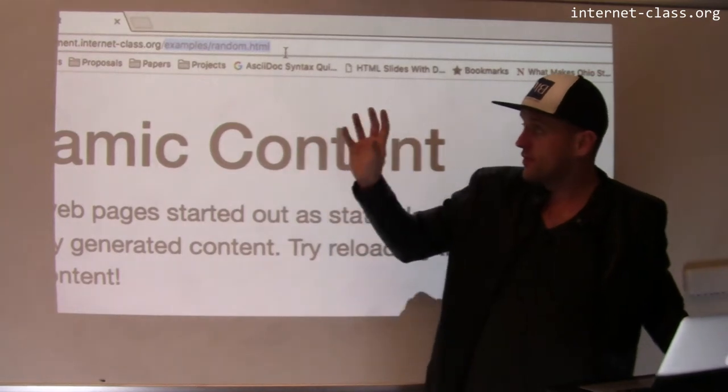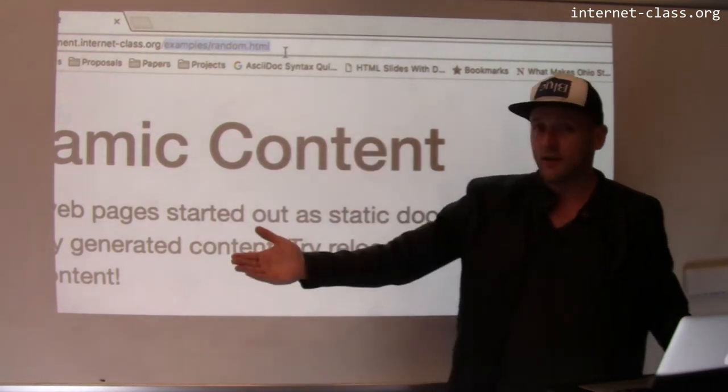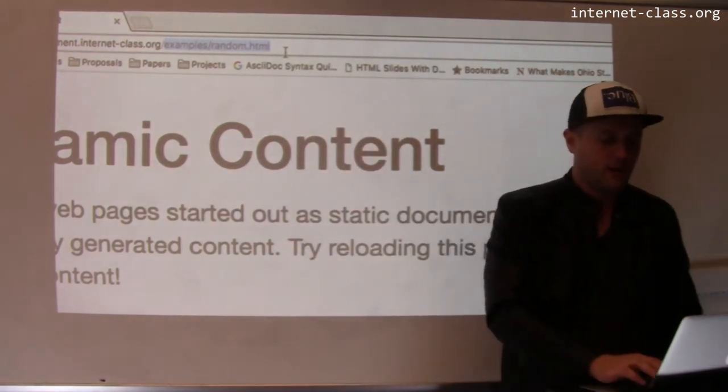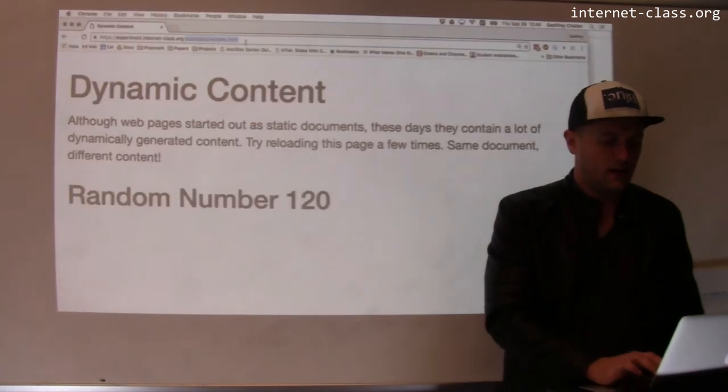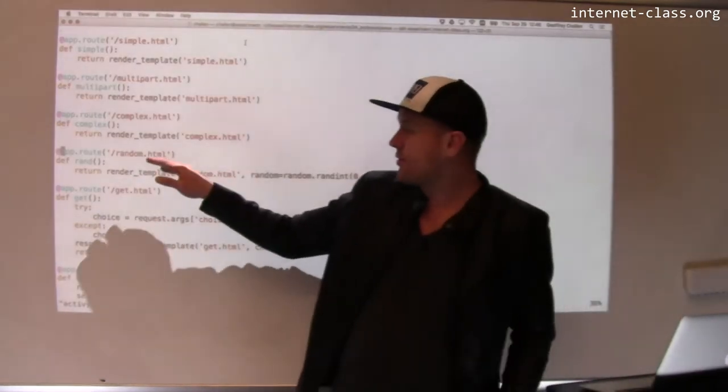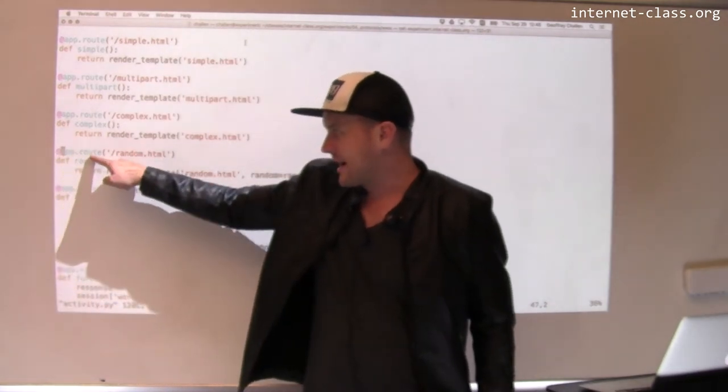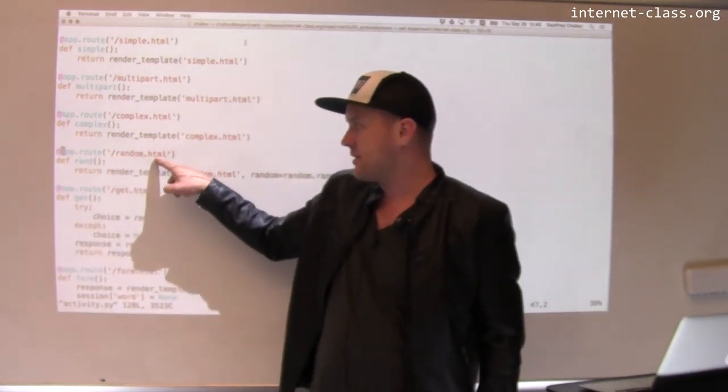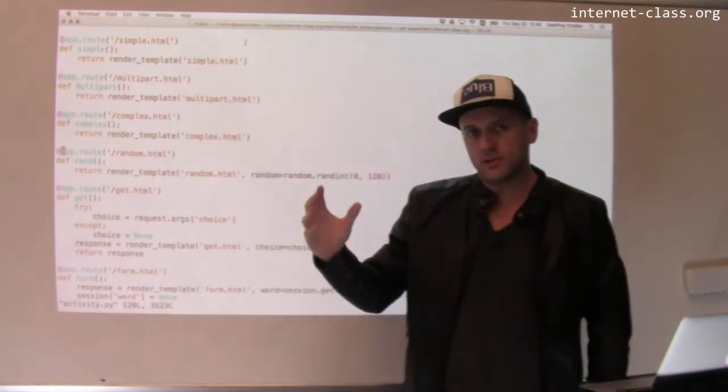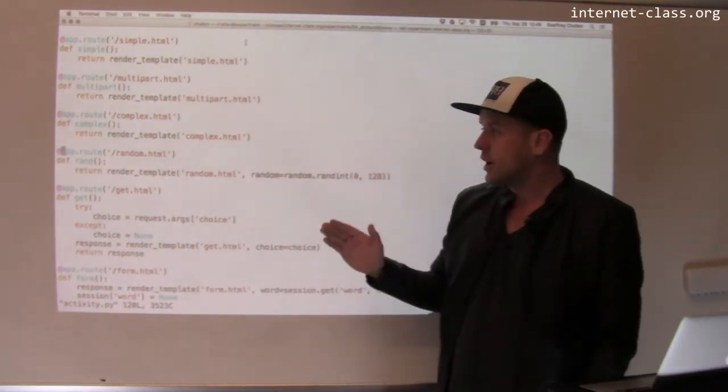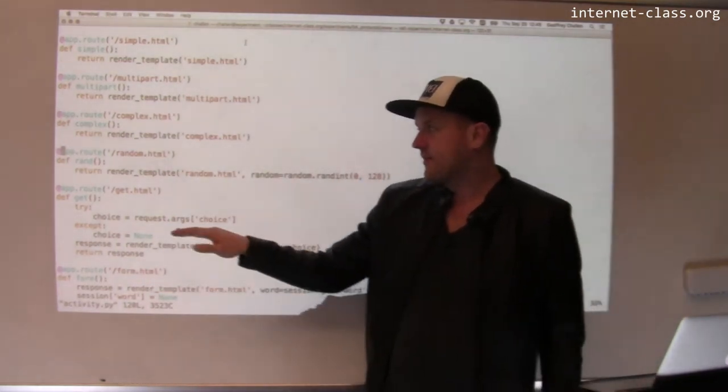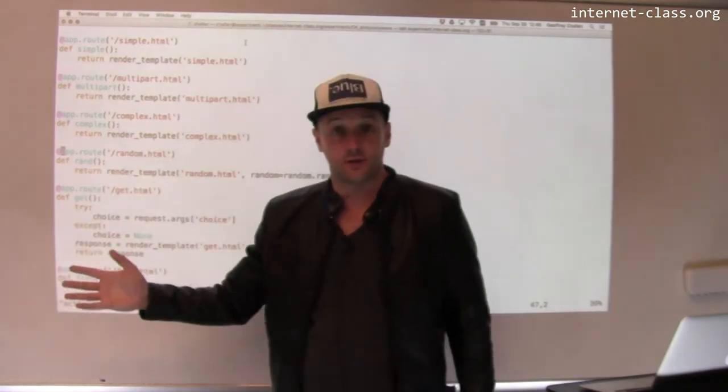So the web server stripped off the first part of it and then it sent the request to this computer program. And the computer program and this code registers this piece of code right here, app.route /random.html. What that tells this particular program is that when there's a request for random.html, you should run this function.